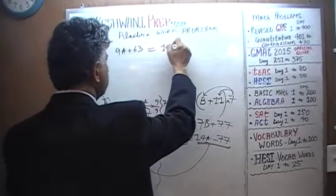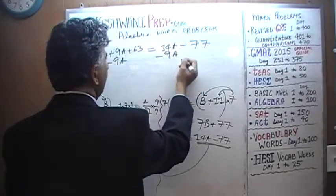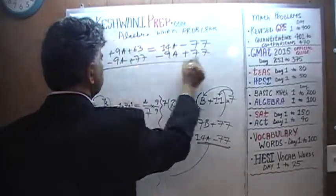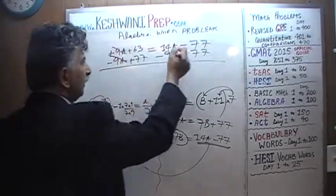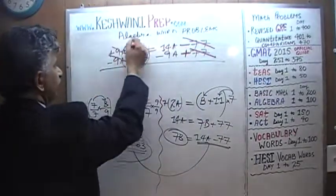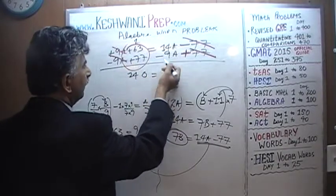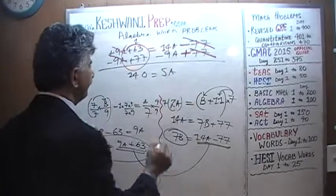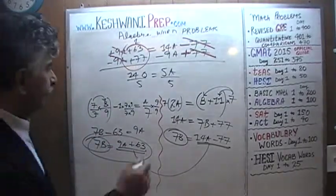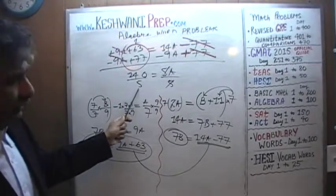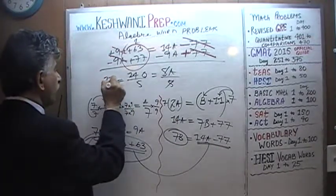Since both expressions equal 7B, set them equal: 9A plus 63 equals 14A minus 77. Subtract 9A from both sides and add 77 to both sides. The 9A terms cancel, and 63 plus 77 equals 140. We get 5A equals 140, so A equals 28.